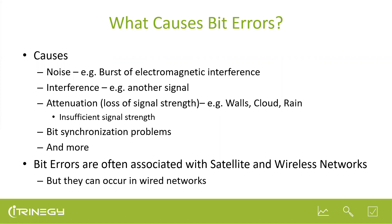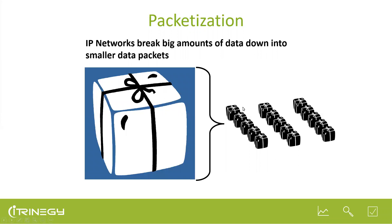Bit errors tend to occur most in wireless networks — satellite can be equated as a form of wireless network since it certainly doesn't have any wires. Bit errors can also occur in wired networks, but the probability — the bit error rate — is generally going to be very low.